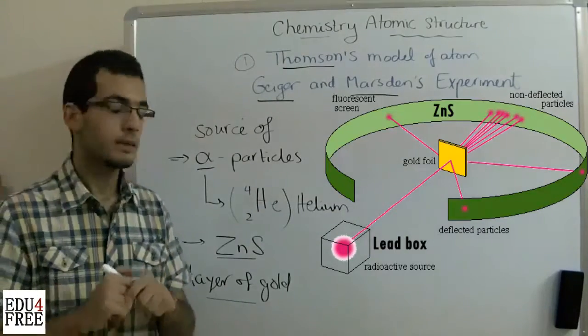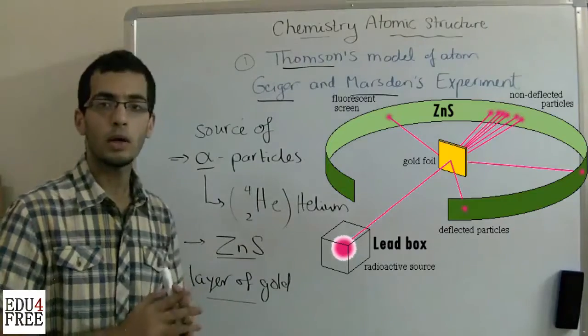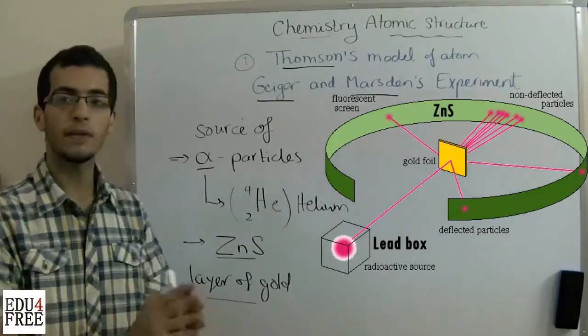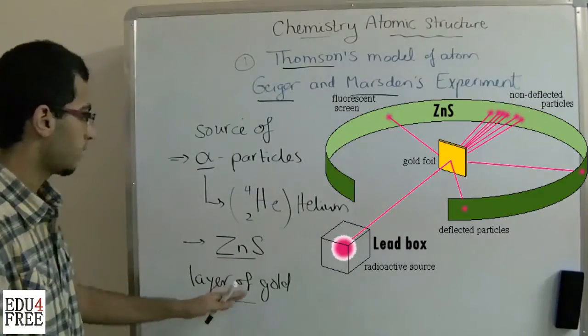And finally, some of the alpha particles were rejected. They hit the layer of gold and were reflected back as they didn't pass through this layer of gold.